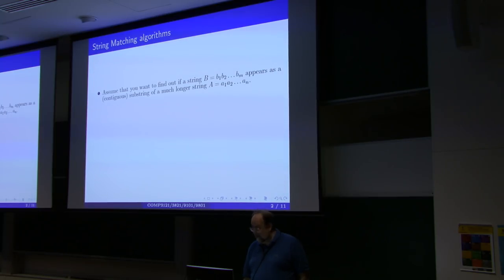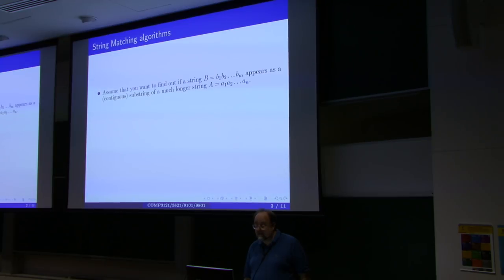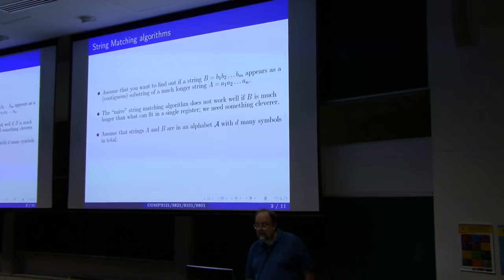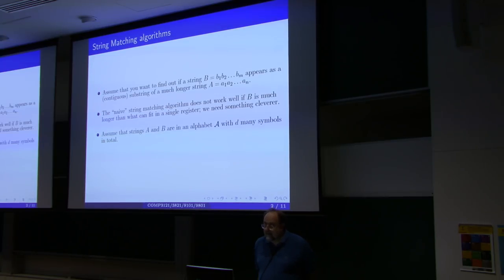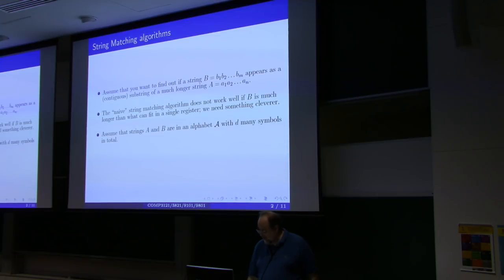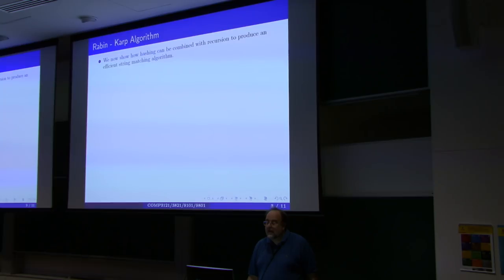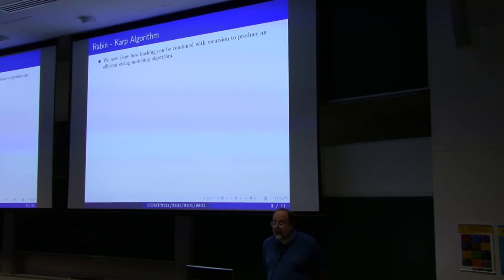There are clever algorithms that significantly speed up the search and are important in practice. The worst-case performance of these algorithms is as bad as brute force, but in practice this never happens. Assume that you have two strings A and B in an alphabet with D many symbols. If you are searching for a gene inside the genome, D will be four, because there are four bases. We will now show a very clever algorithm that combines recursion and hashing to produce a very efficient string matching algorithm.